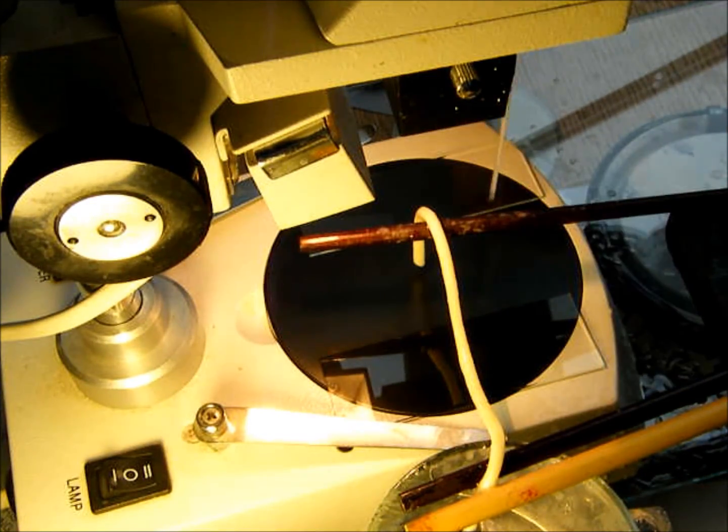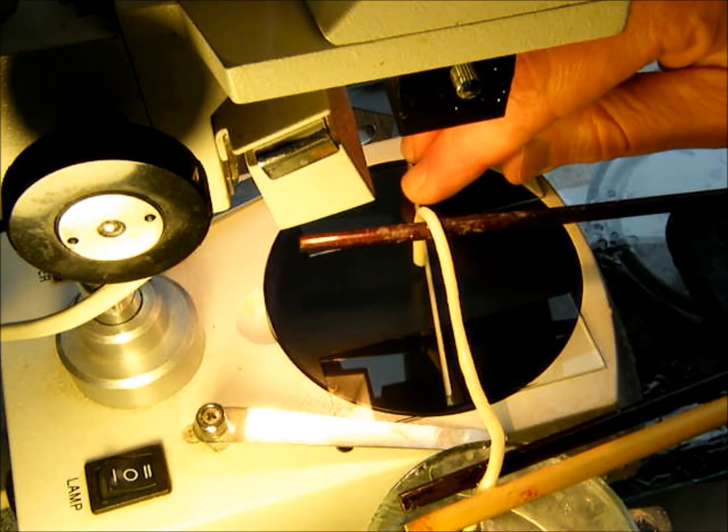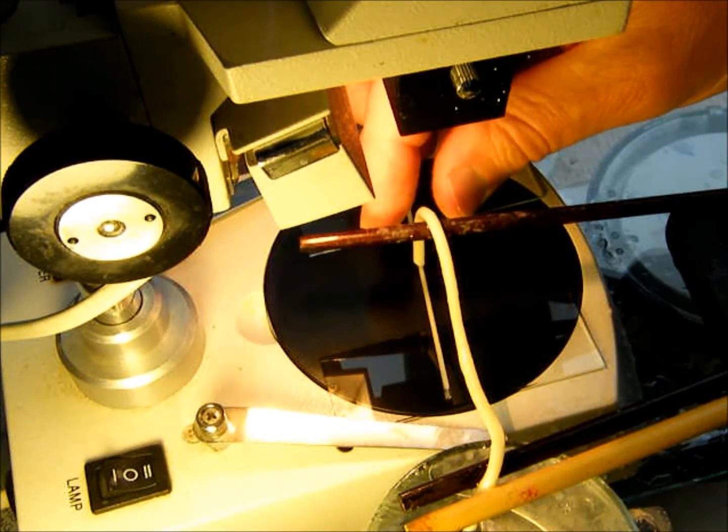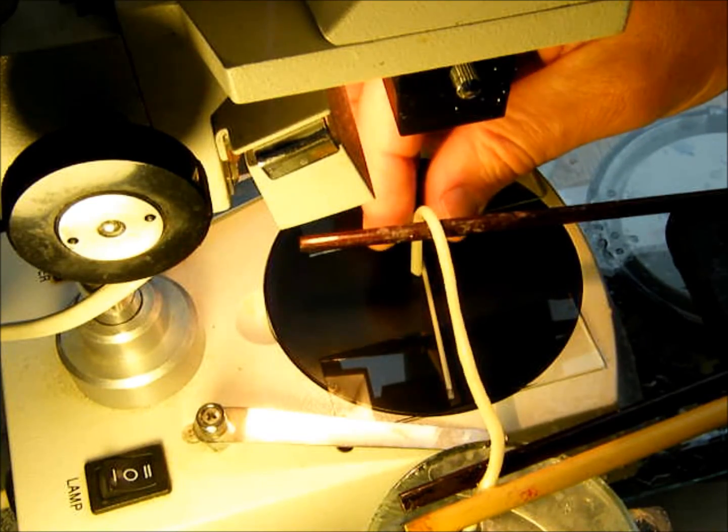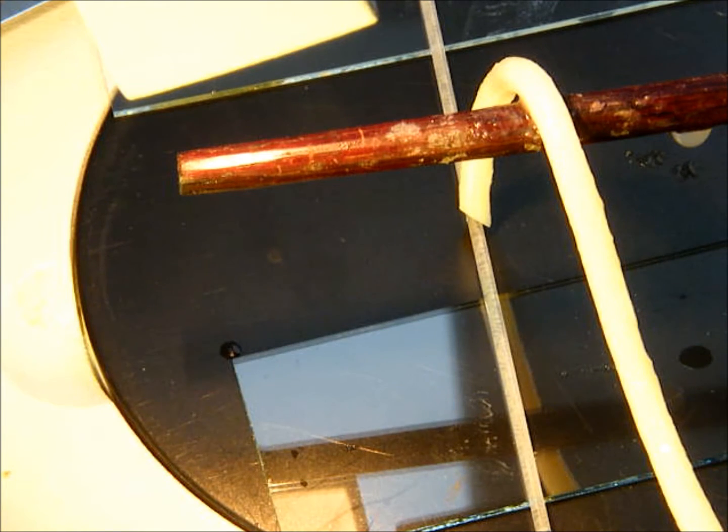Most microfluidic chambers are made of glass, silicone or plastic. A spaghetti waveguide can transfer sound into these chambers. Here, a glass capillary tube is used as an example chamber.